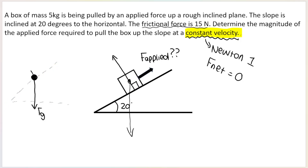I must draw the normal force at 90 degrees to the slope. You can't draw it at just any angle — the angle between the surface and the normal force must be 90 degrees. That is N or FN. Then F applied is going up the slope, parallel to the slope.